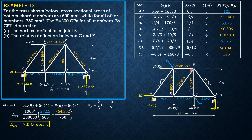Summation of forces X at B gives BC equals 215 over 3 minus 0.6P. Proceeding to joint C, summation of forces Y gives CE equals 80 minus 0.8P. Summation of forces X gives CD equals 215 over 3. Proceeding to joint D, summation of forces Y gives DE equals negative 1075 over 9. Then check joint E: summation of forces X and summation of forces Y both equal 0, which guarantees all these values are correct.